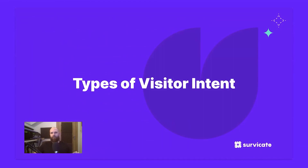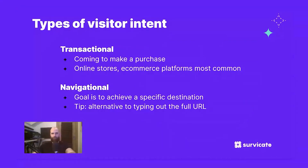Now let's get into the different types of visitor intent. There are generally three to four types depending on your goals and department — today we'll focus on four. Starting with transactional intent: these visitors are coming to make a purchase, like on e-commerce platforms. The goal is to complete a specific action. We've also got navigational intent, where visitors are looking for a specific resource or page — for example, searching 'Facebook' on Google to navigate directly to it.